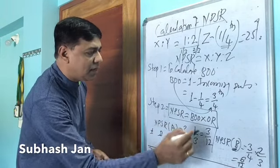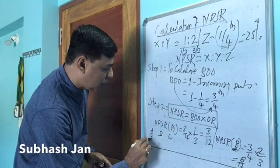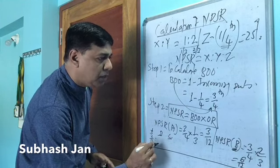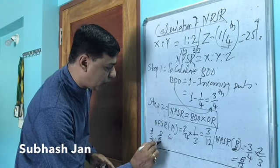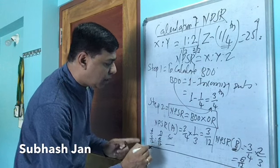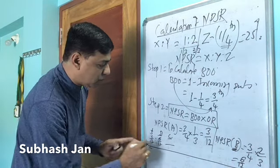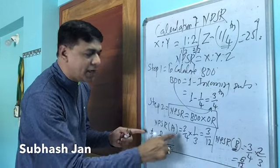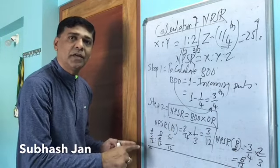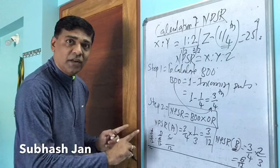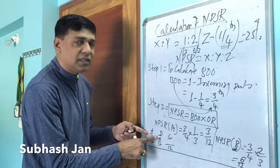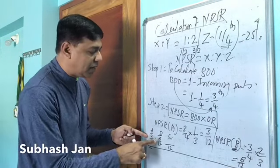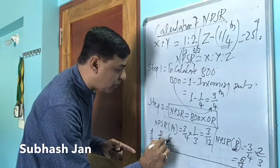Now when we take X, Y, and Z, X is 3 upon 12, Y is 6 upon 12. Now here for Z, keep the denominator as it is. What is the denominator? 12. Keep it as it is and make the numerator total equal to the denominator, that is 12. So 3 plus 6 is 9, 9 plus 3 is 12. So the ratio is ready.